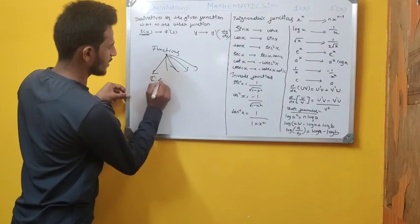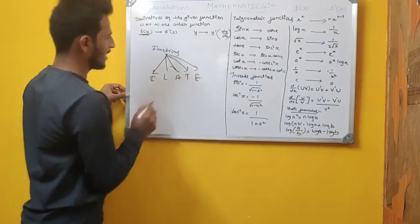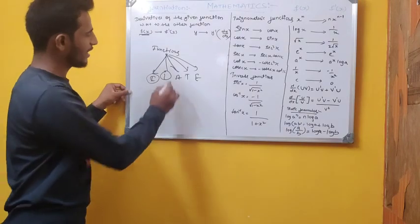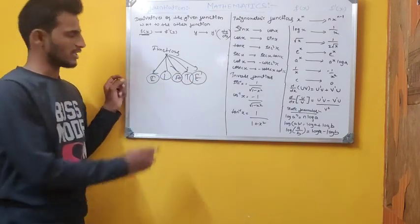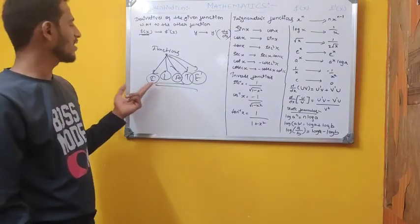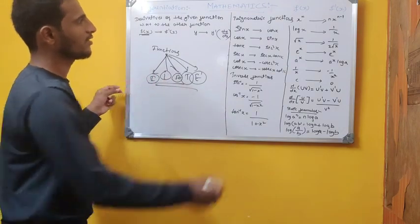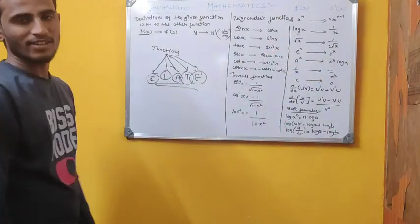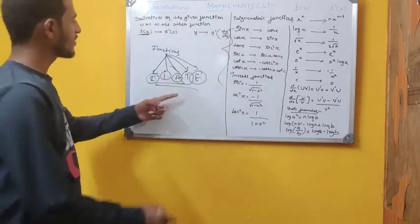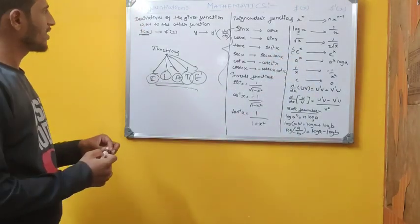There are inverse trigonometric, logarithmic, arithmetic, trigonometric, and exponential functions. These are the types of functions. Logarithmic means functions like log x, log₂x. Trigonometric functions include the standard trig functions, and exponential includes e^x.